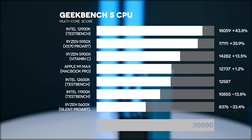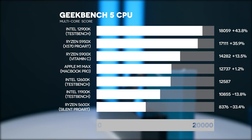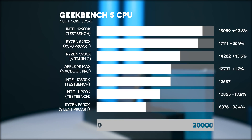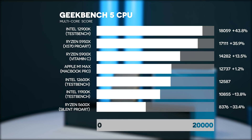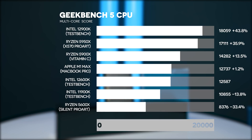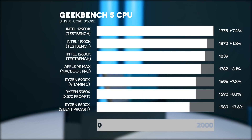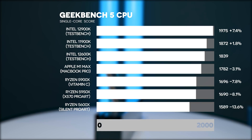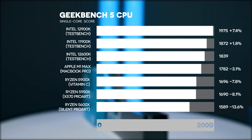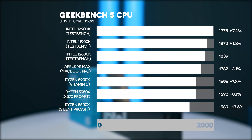Moving on to Geekbench 5, which gives an idea of processor performance in generic everyday tasks. In multicore, the 12900K is 43.5% faster than the 12600K. The 5950X is 35.9% faster and the 5900X 13.5% faster. The M1 Max is 1.2% faster — though Geekbench seems to favour Apple. The 11900K is 13.8% slower and the 5600X 33.4% slower. On single core, the 12900K is 7.4% faster; interestingly the 11900K is slightly faster than the 12600K here. The M1 Max is 3.1% slower, the 5900X 7.8% slower, the 5950X 8.1% slower, and the 5600X 13.6% slower.